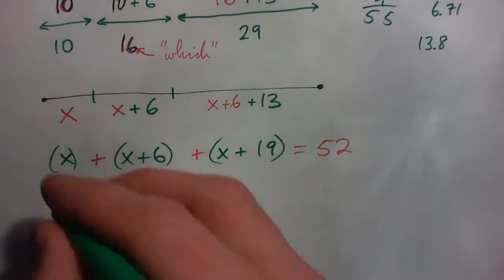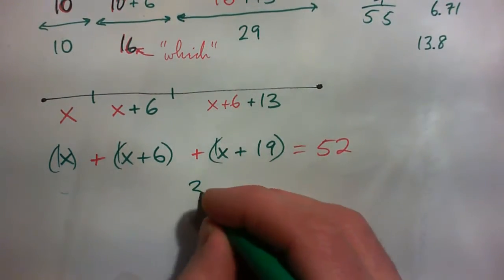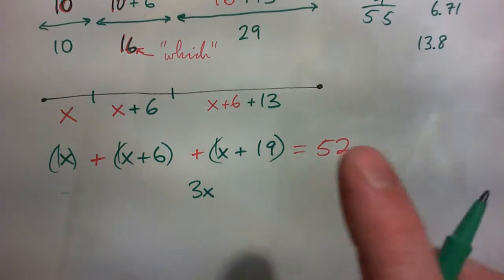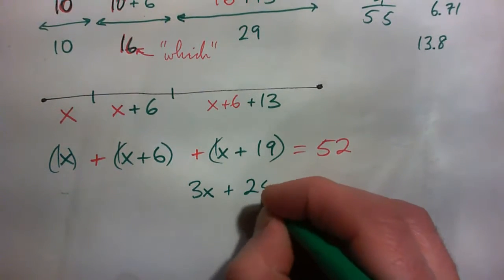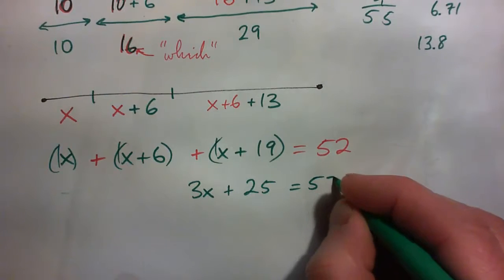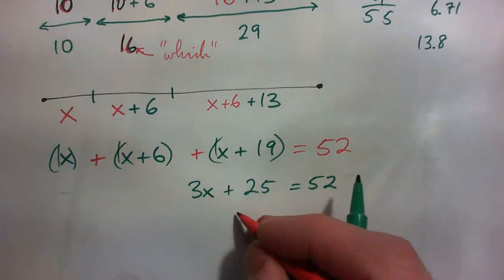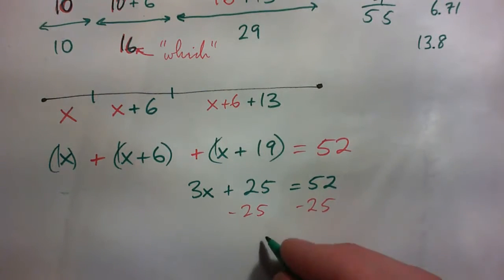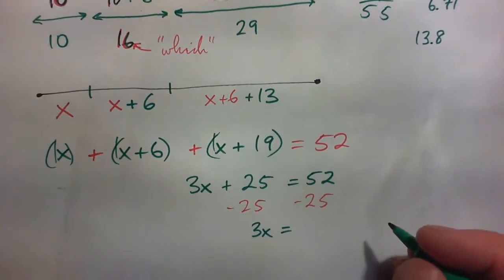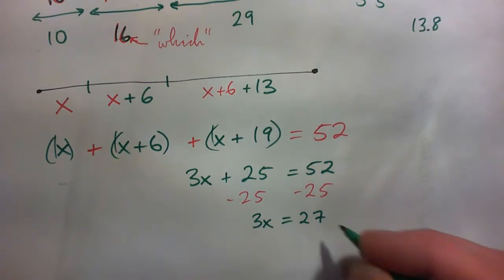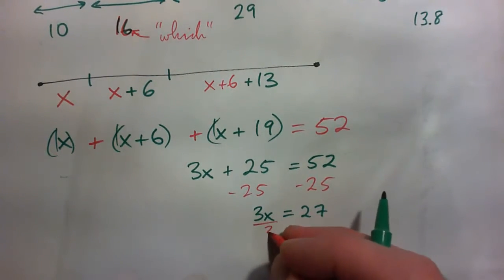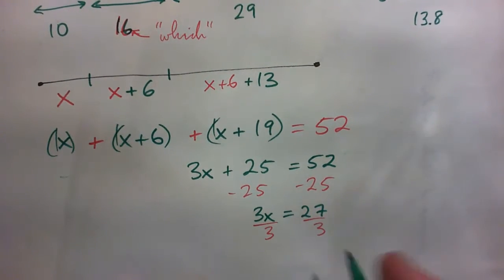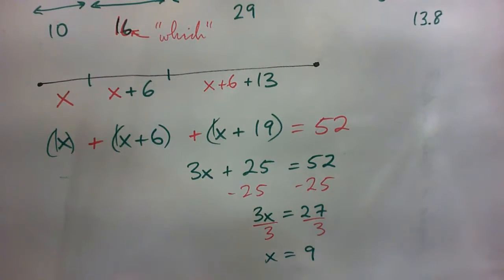I'll do it now. So it's 1X plus 1X plus 1X, that's 3X. And then 6 plus 19, that's 25, equals 52. And then we solve for X. Subtract 25, and we get 3X equals 27, and then we divide by 3, and we get X equals 9. So are we done? Is that the answer? What else do we have to do?